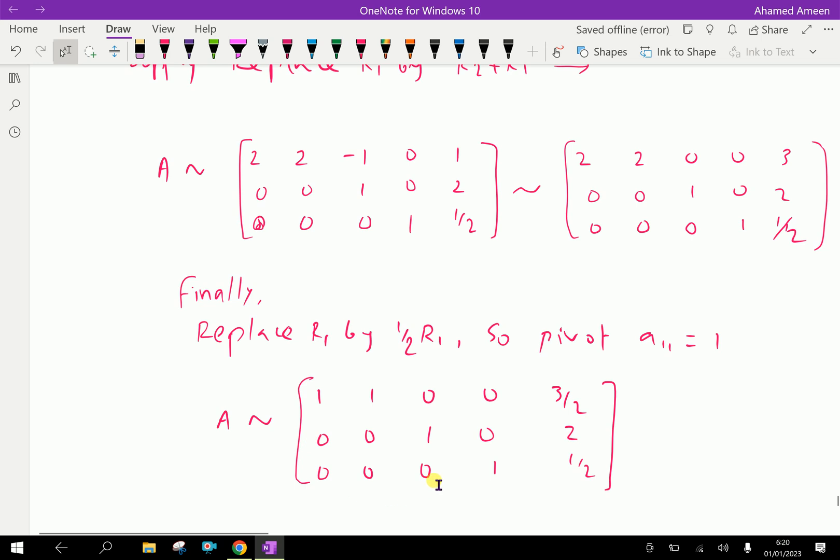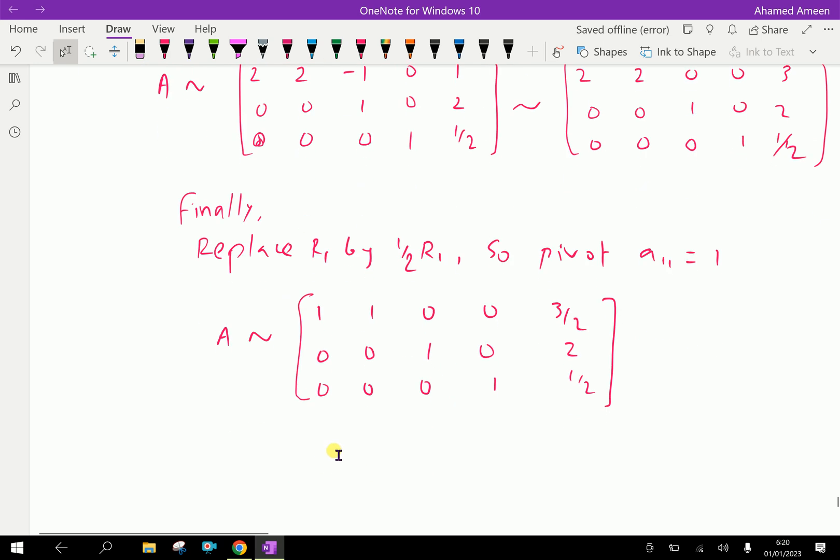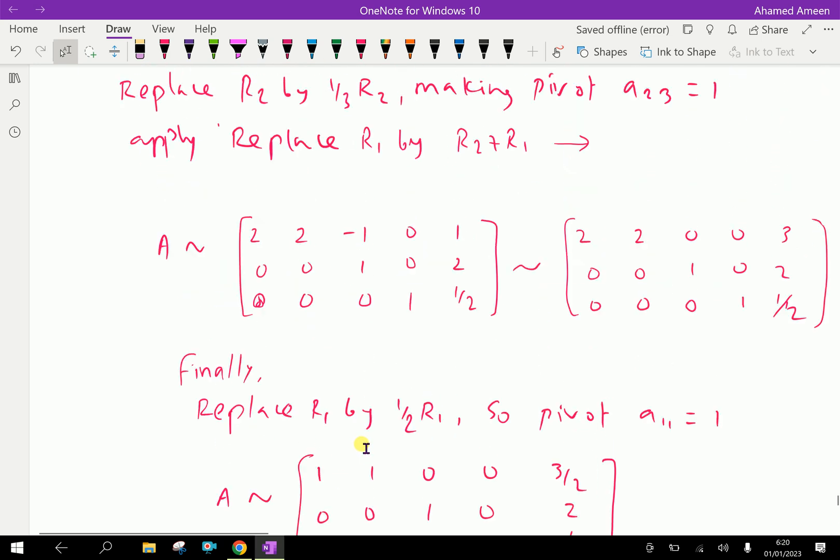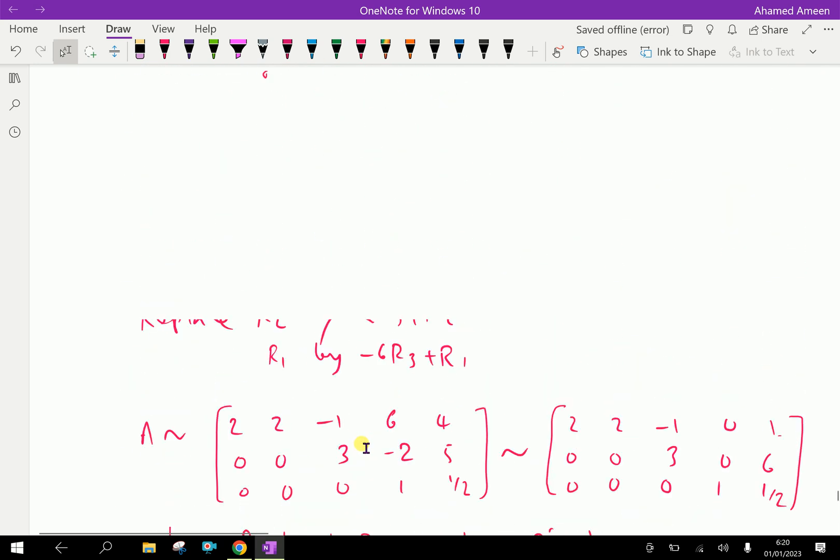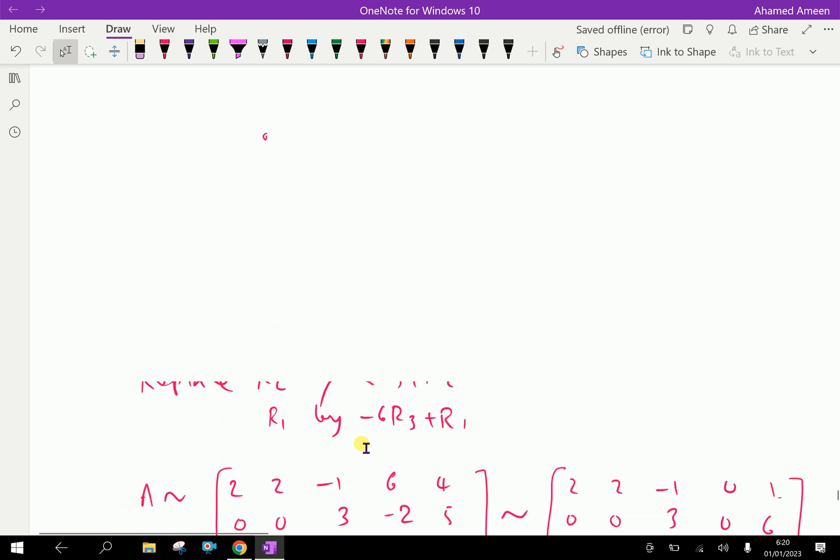This is row canonical form. We are getting all zeros below, so it's a row canonical form. Finally got the row canonical form. Please subscribe to our YouTube channel.